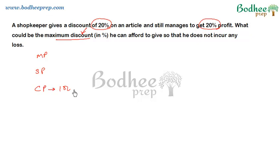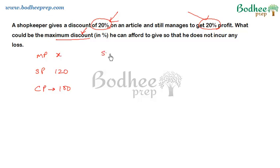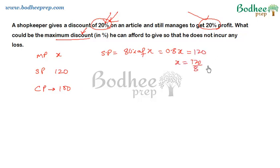Let's assume the cost price of the article is 100. Since he is getting 20% profit, the selling price must be 120. The mark price must be greater than the selling price so that after offering a 20% discount, he still sells it at 120 rupees. If we assume the mark price to be X, then the selling price would be 80% of X, that is 0.8X. Since the selling price is 120, we get X = 120 / 0.8 = 150.